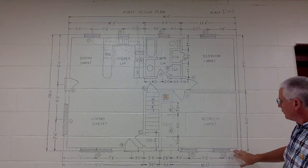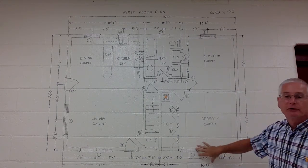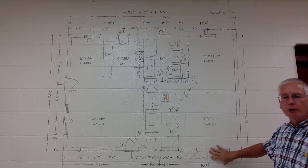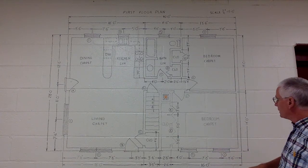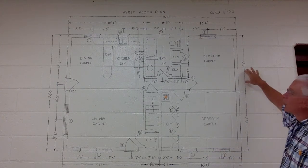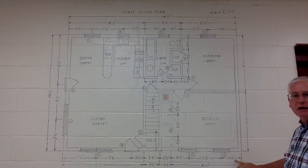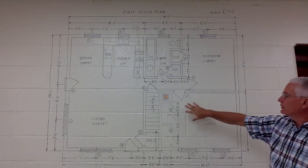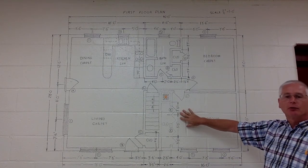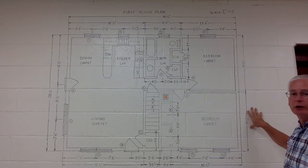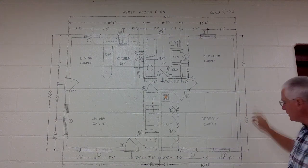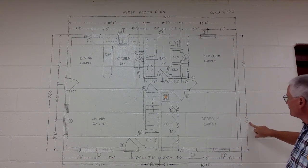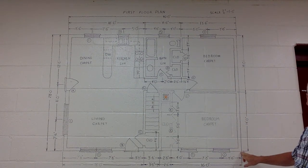The wall on the front of the house — typically the bottom of the drawing is going to be considered the front of the particular house. Going around the outside of the drawing and on the inside there will be dimensions. These show us where certain things are going to be located. This 14-foot dimension is from the outside of the wall.